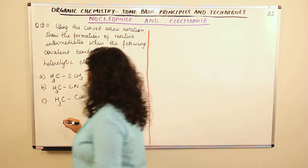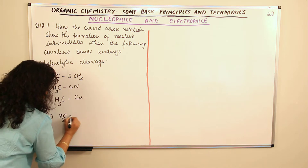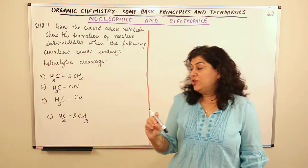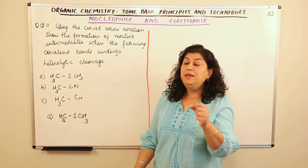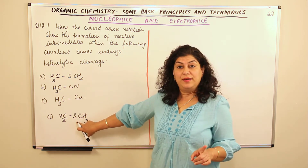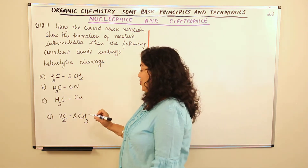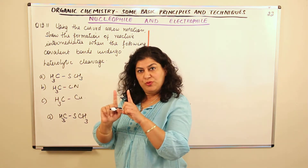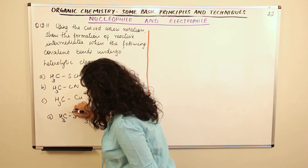The first compound is CH₃SCH₃. In this compound, the bond undergoing heterolytic cleavage is the carbon-sulfur bond. Now if you compare carbon and sulfur: carbon is less electronegative than sulfur. So the electrons will move toward sulfur — the more electronegative atom.